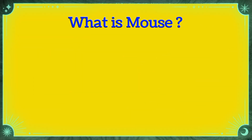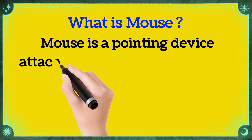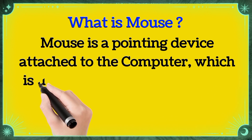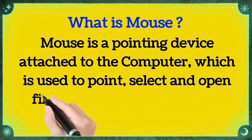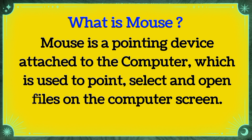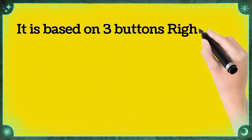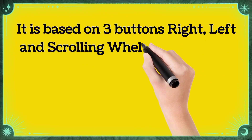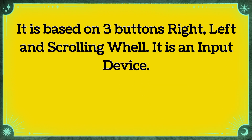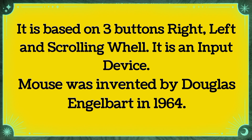What is a mouse? Mouse is a pointing device attached to the computer, which is used to point, select, and open files on the computer screen. It is based on three buttons: right, left, and a scrolling wheel. It is an input device. Mouse was invented by Douglas Engelbart in 1964.